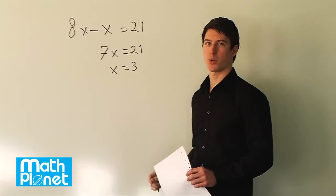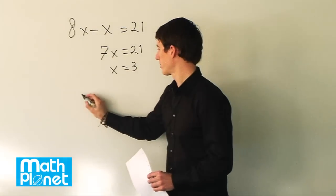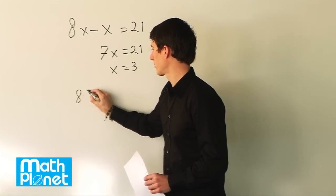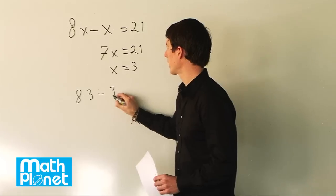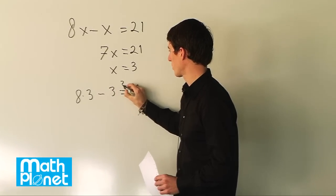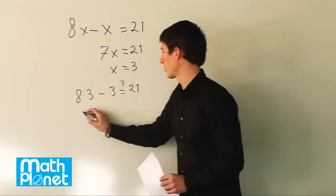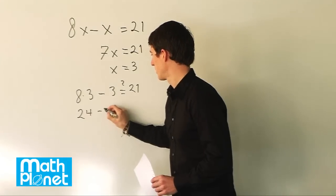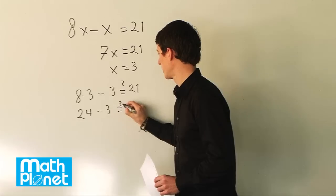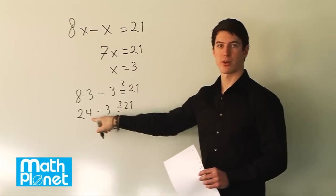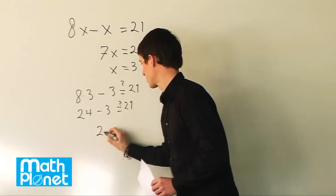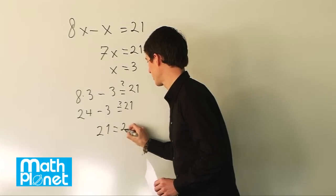Let's go back and check by evaluating at x equals 3. So if we say 8 times 3 minus 3 equals 21. And now it's a check so we put a question mark. So 8 times 3 is 24. Minus 3 equals 21. And sure enough, 24 minus 3 is just 21. So 21 equals 21.